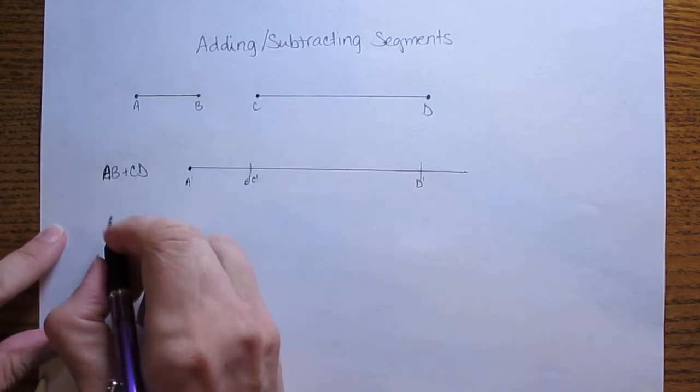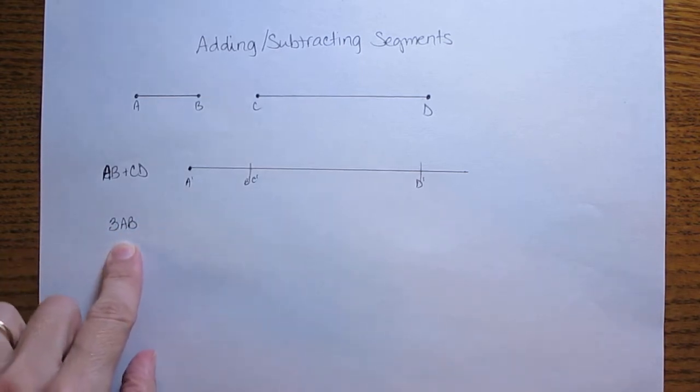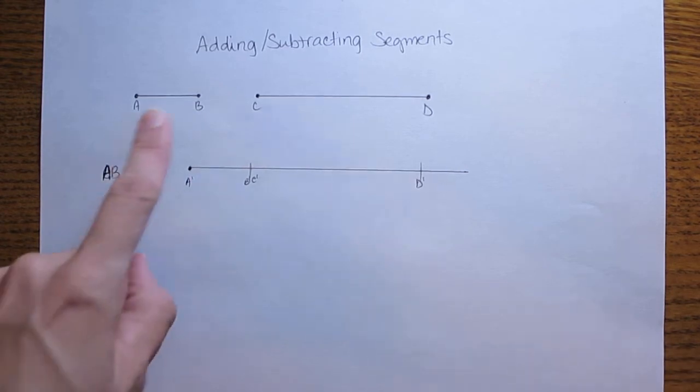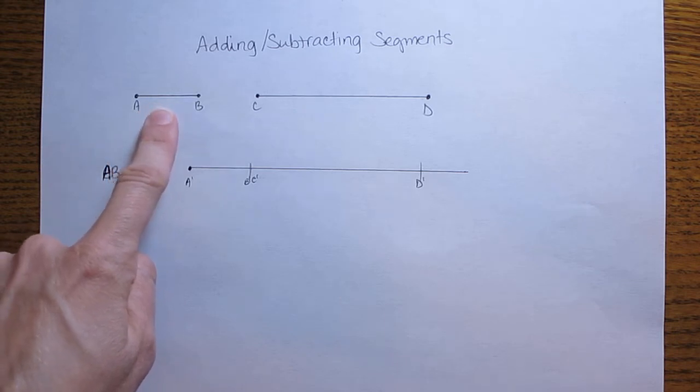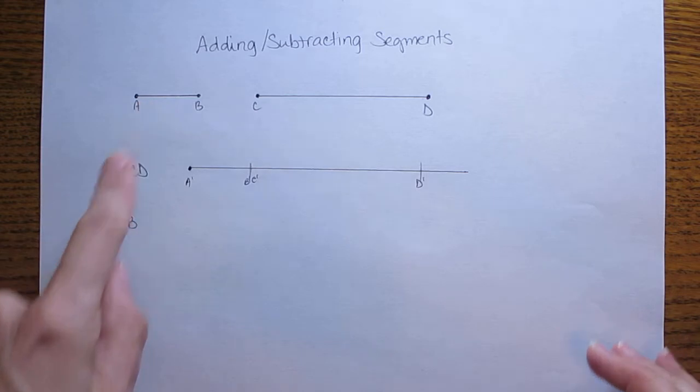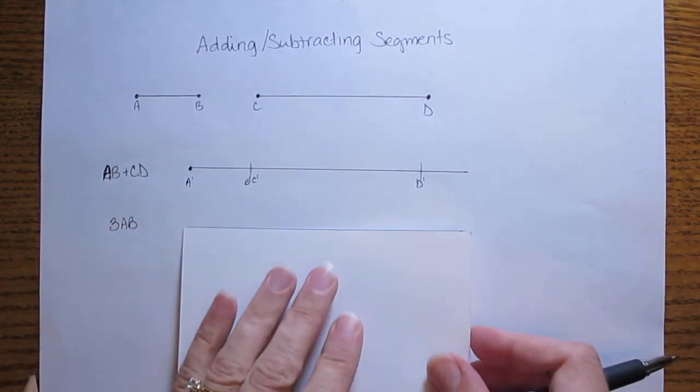Now what if you had 3AB and you're asked to construct 3AB. 3AB is just copying segment AB three times after itself. So segment AB, AB, AB. To do this we'll start the same way.